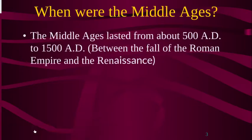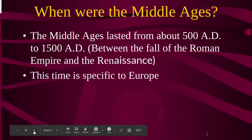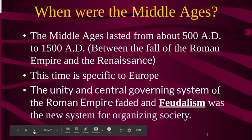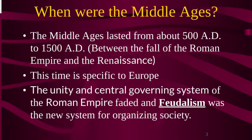So when were the Middle Ages? The Middle Ages lasted about a thousand years, from about 500 A.D. to 1500 A.D. This is really the era that falls in between the ancient era and the modern era. This is a specific European time, and we really see a lot of fractured people, a lot of sad things, a lot of disturbing things.